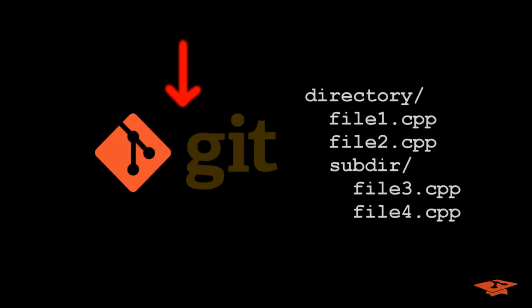Git is the best version control system. It tracks files, preferably source files, but Git doesn't care. These files are generally called the workspace.